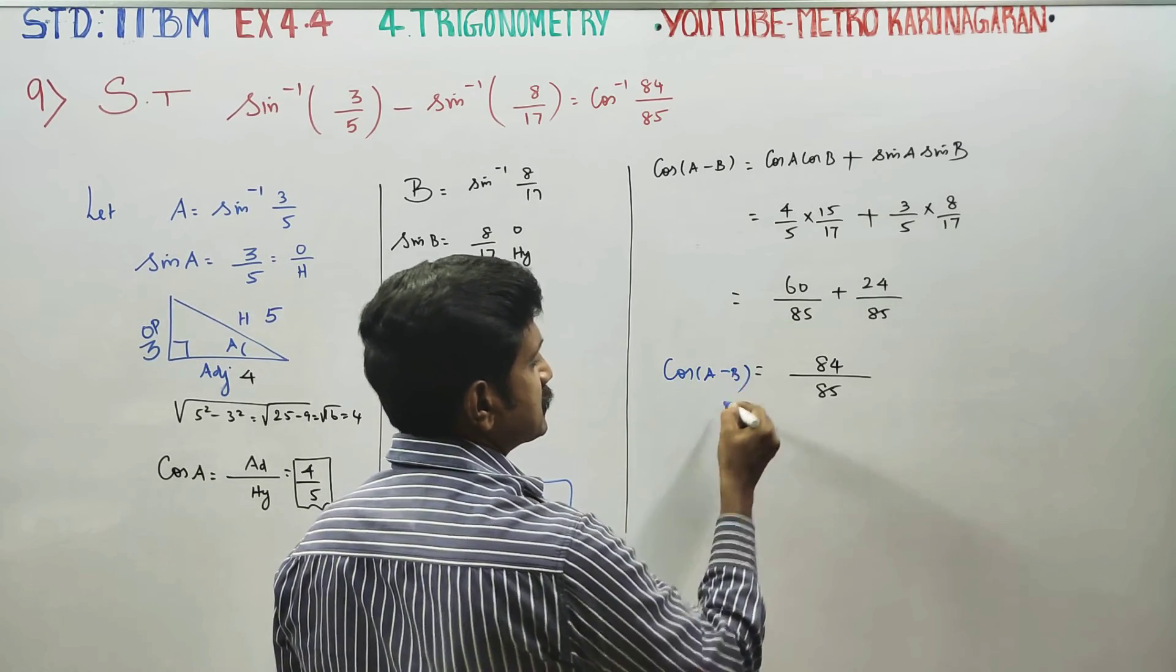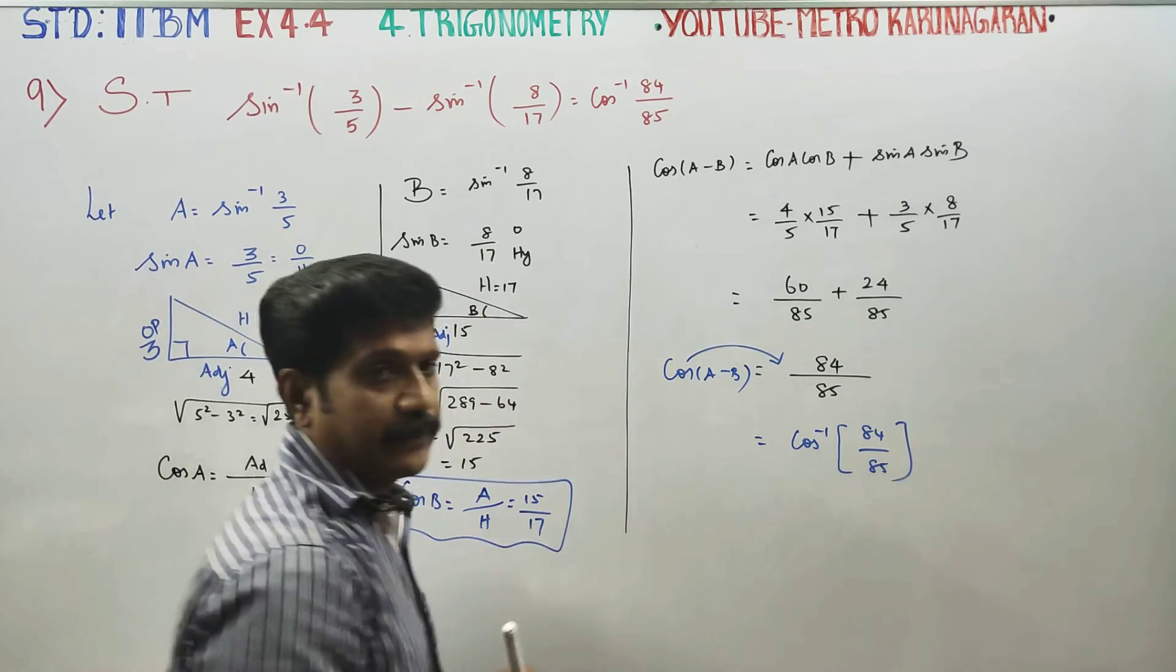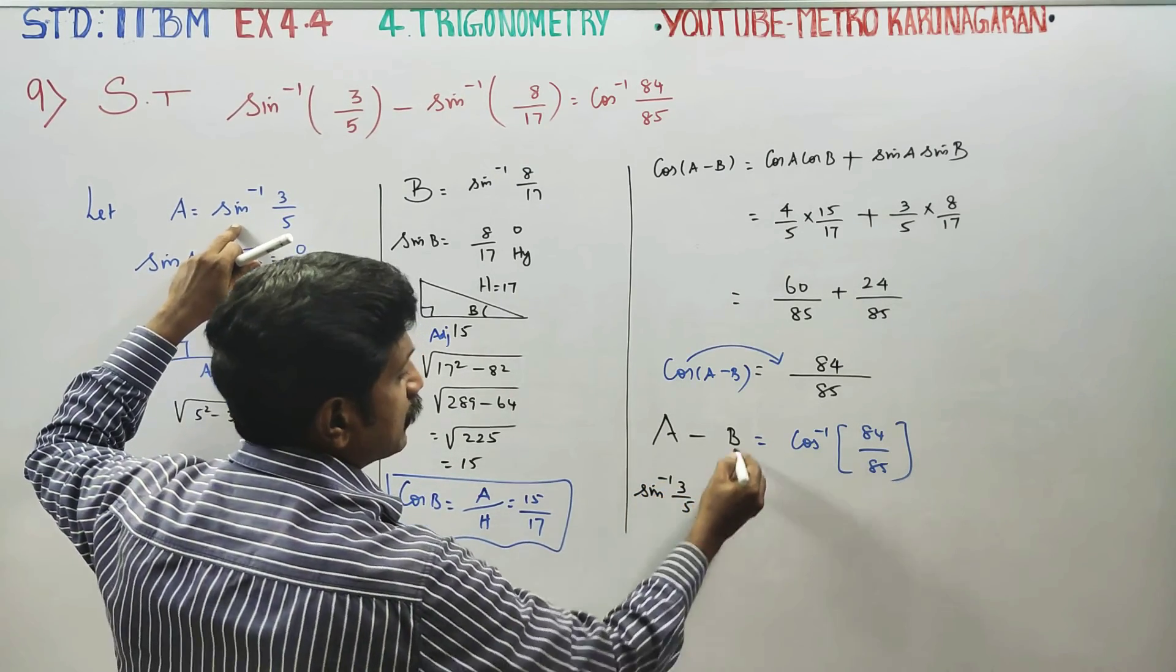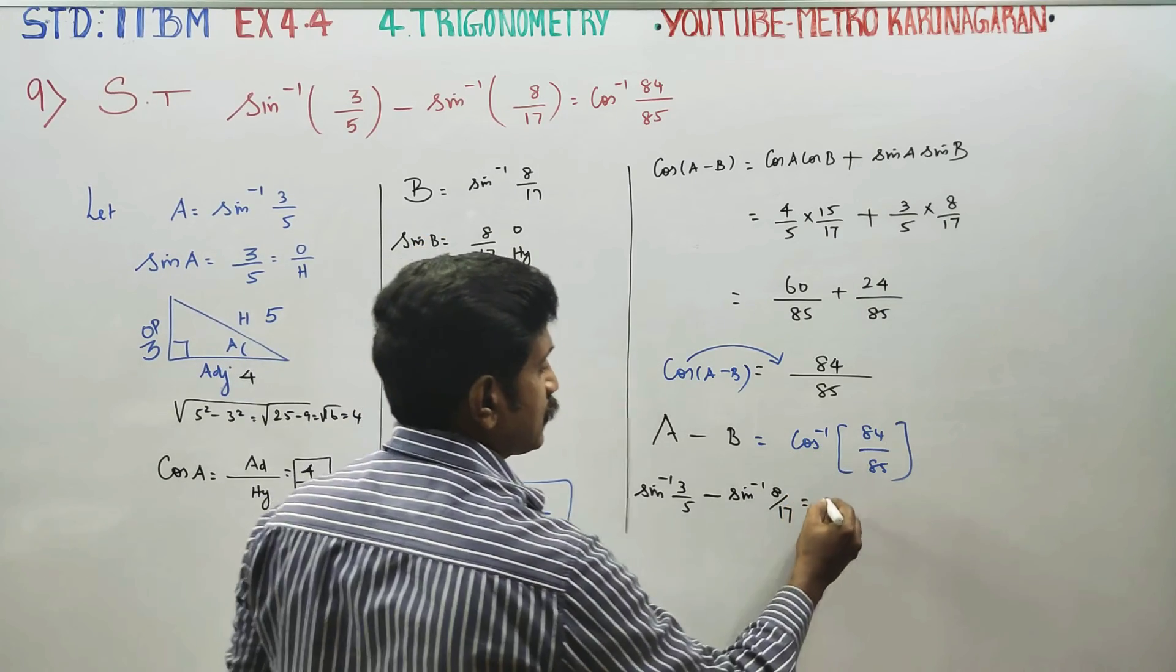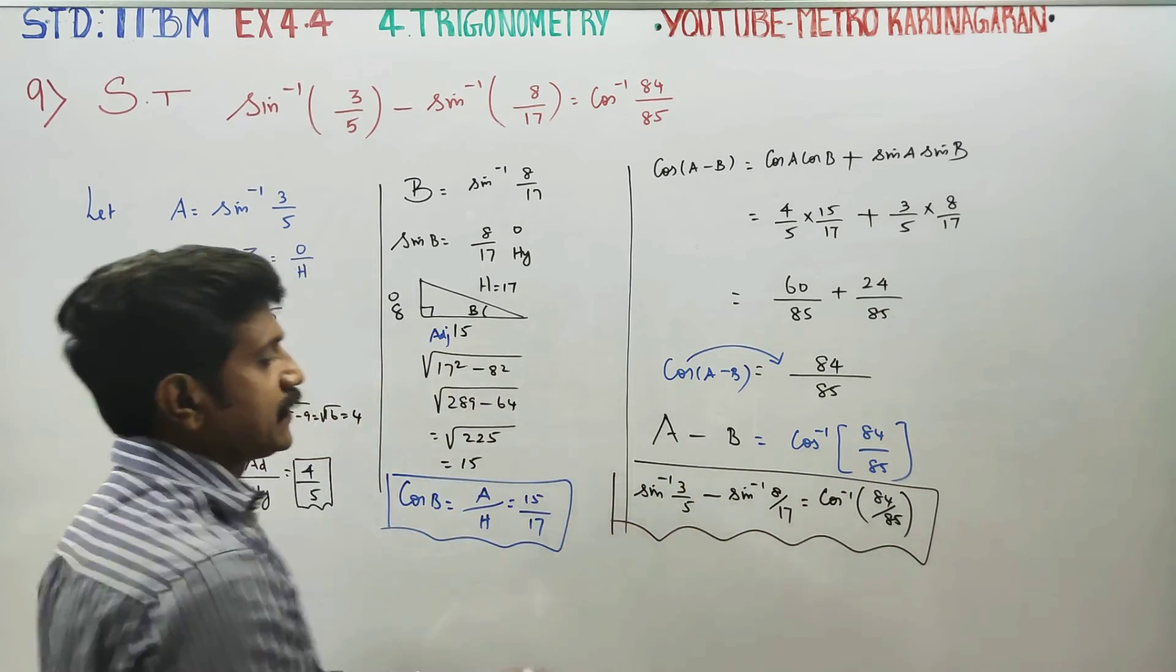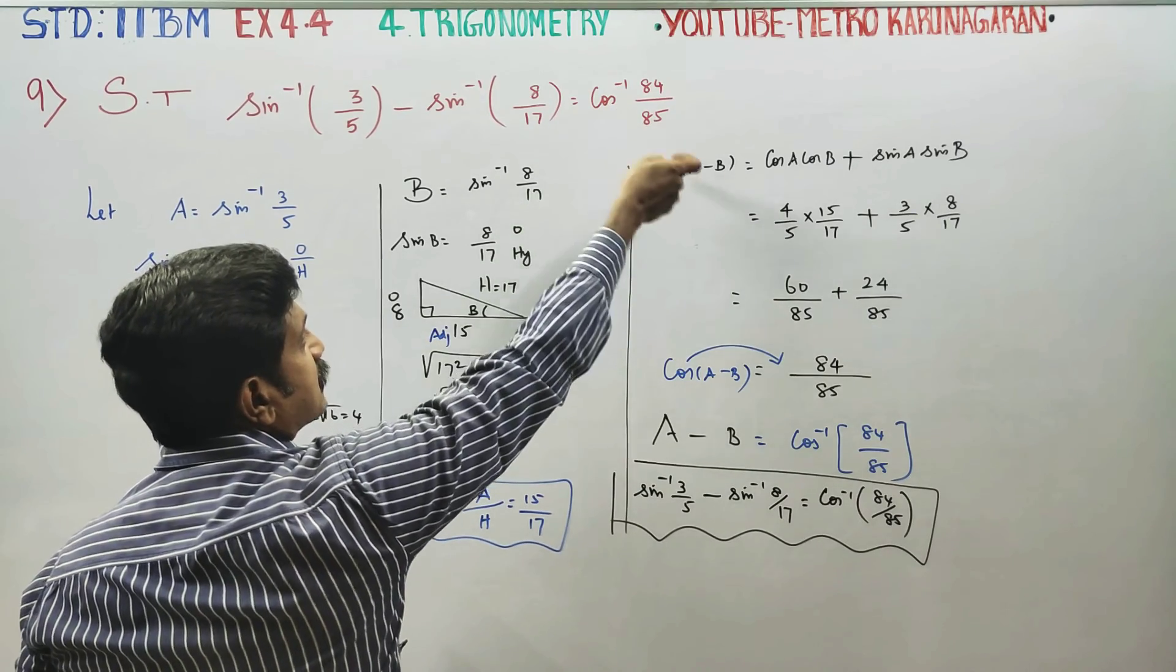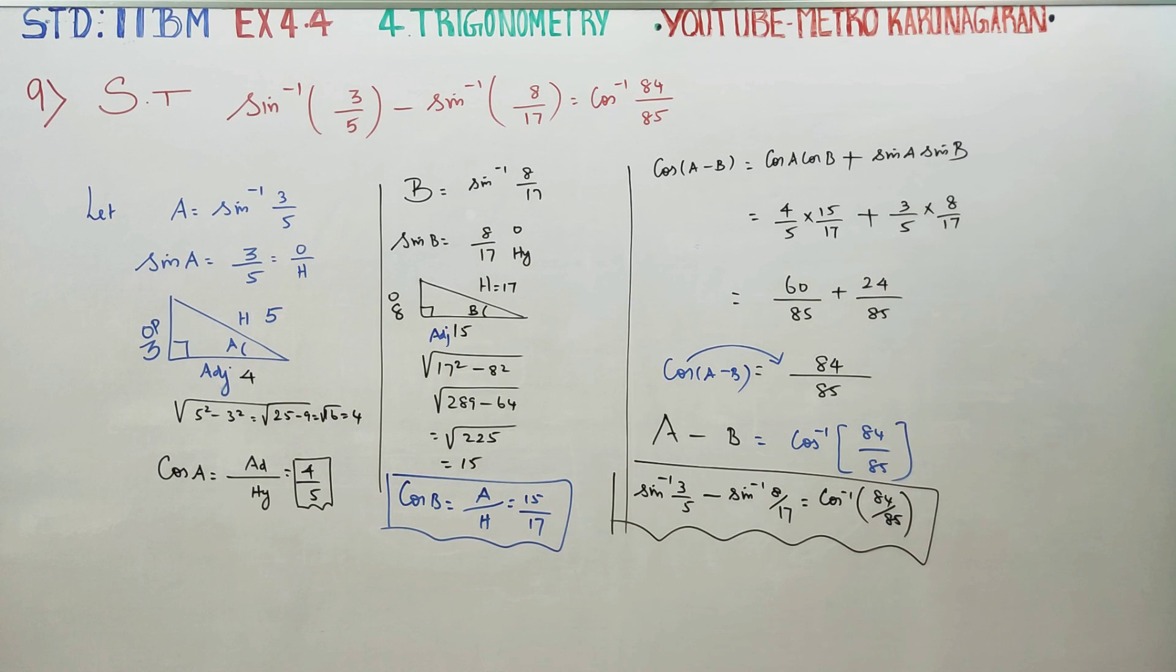Cos A minus B, one answer, cos inverse of 84 by 85. What is A? Sine inverse of 3 by 5. What is B? Sine inverse of 8 by 17, is equal to cos inverse of 84 by 85. Hence proved. Very easy model. This model is very easy. Thank you.